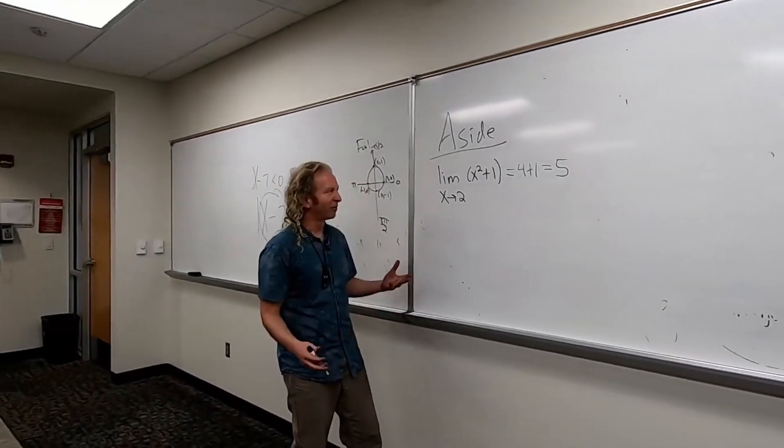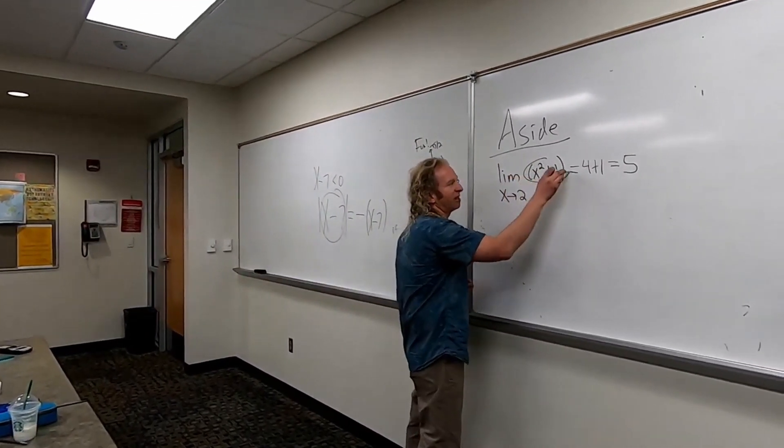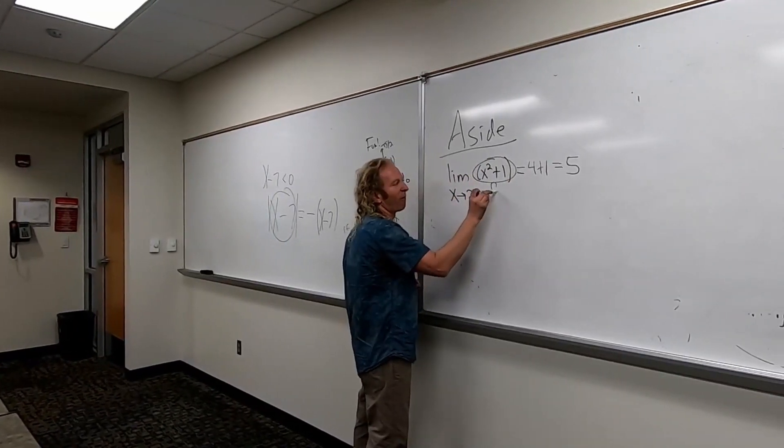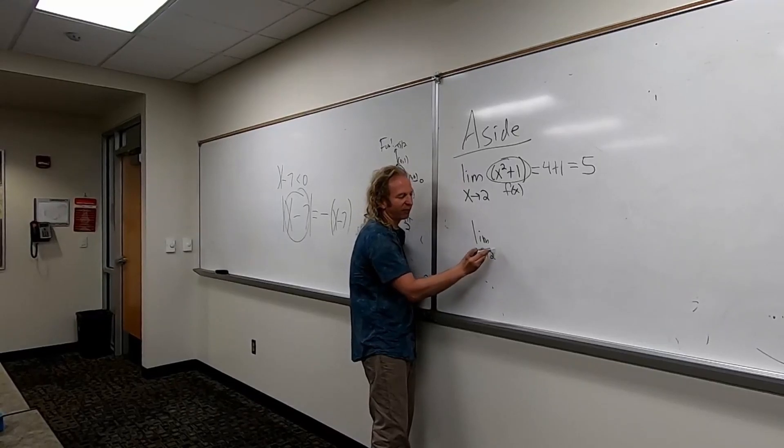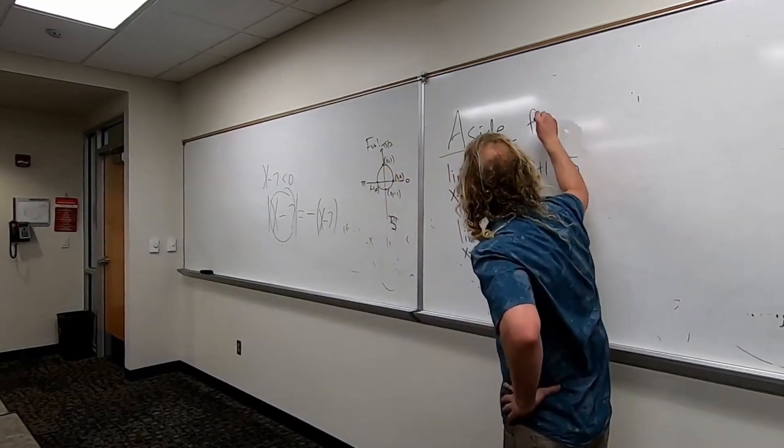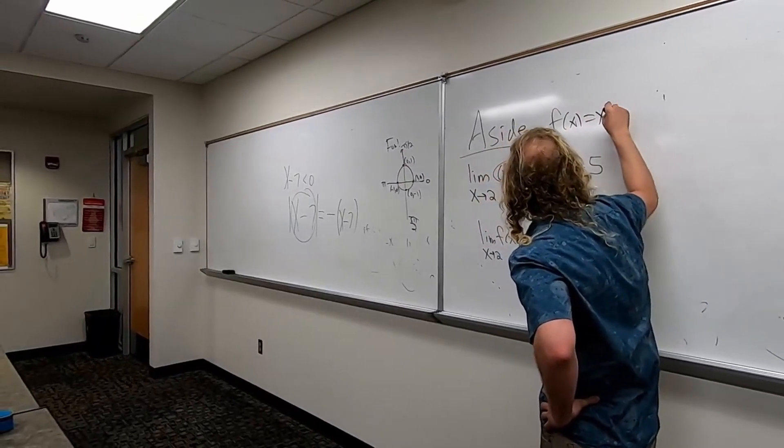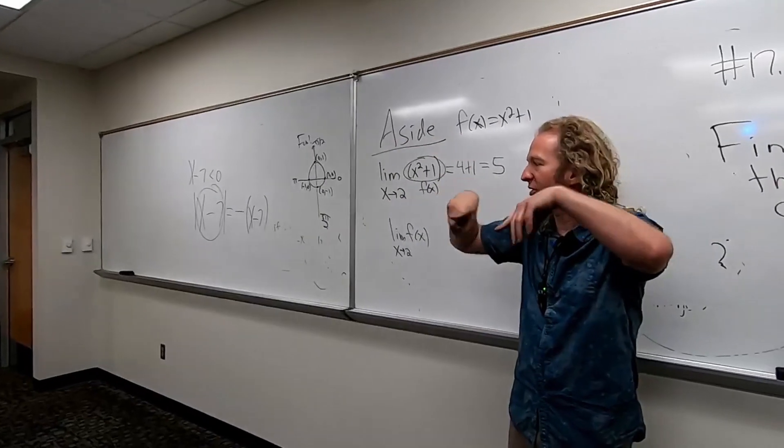So why? Check this out. Think of this as f of x. If you take the limit as x approaches 2 of f of x... f of x, x squared plus 1, that's continuous. It's a parabola, it has no holes or breaks.